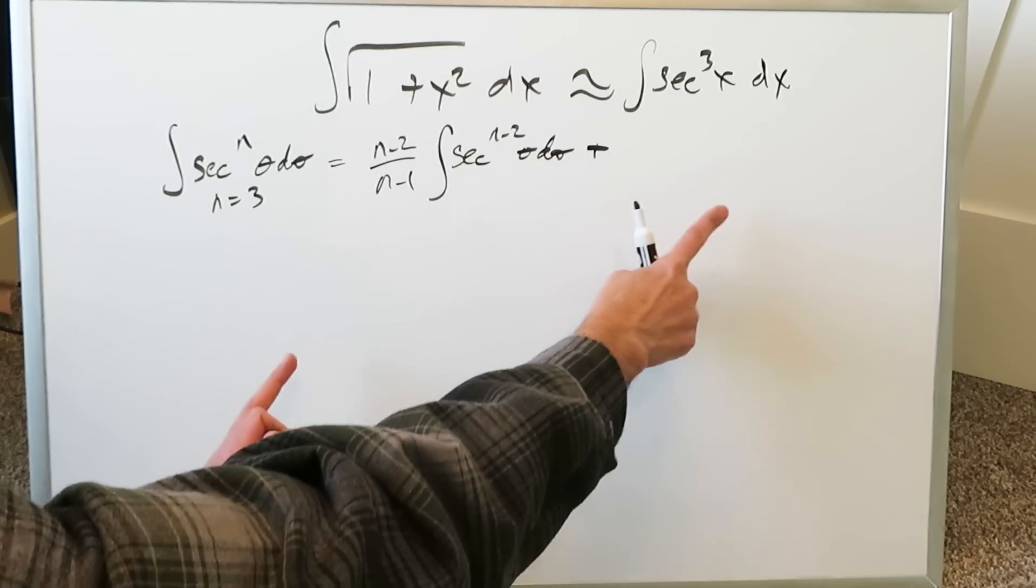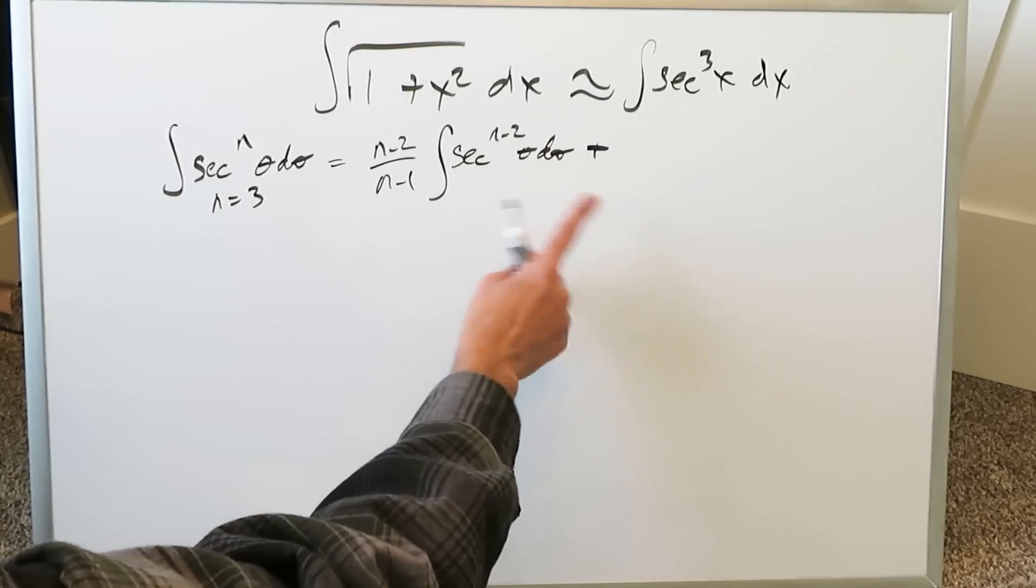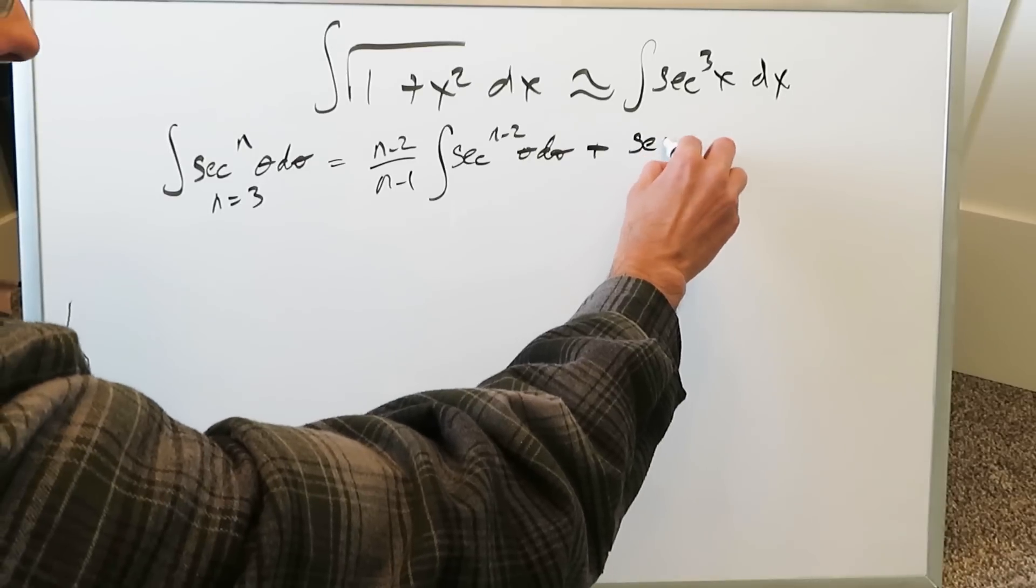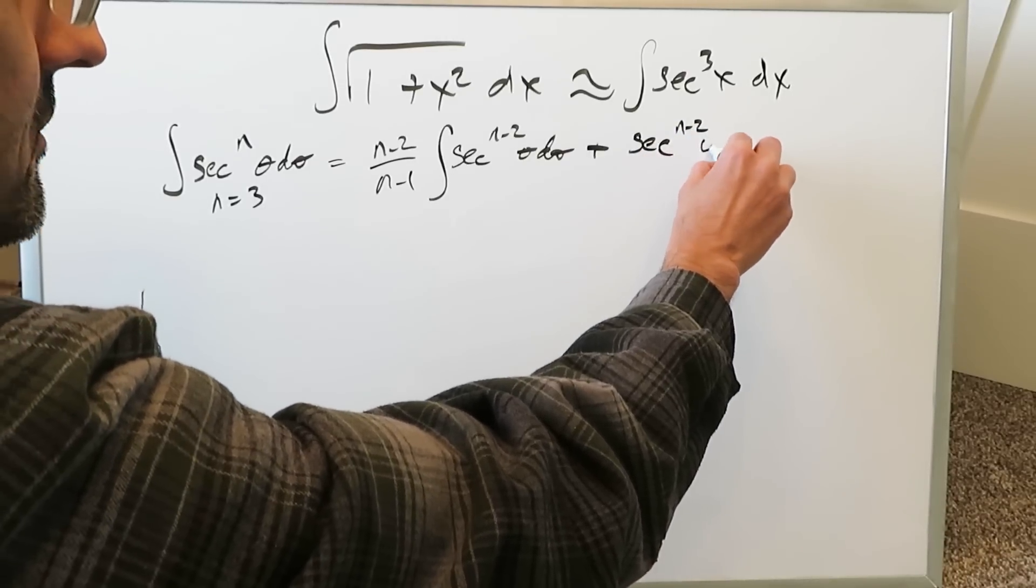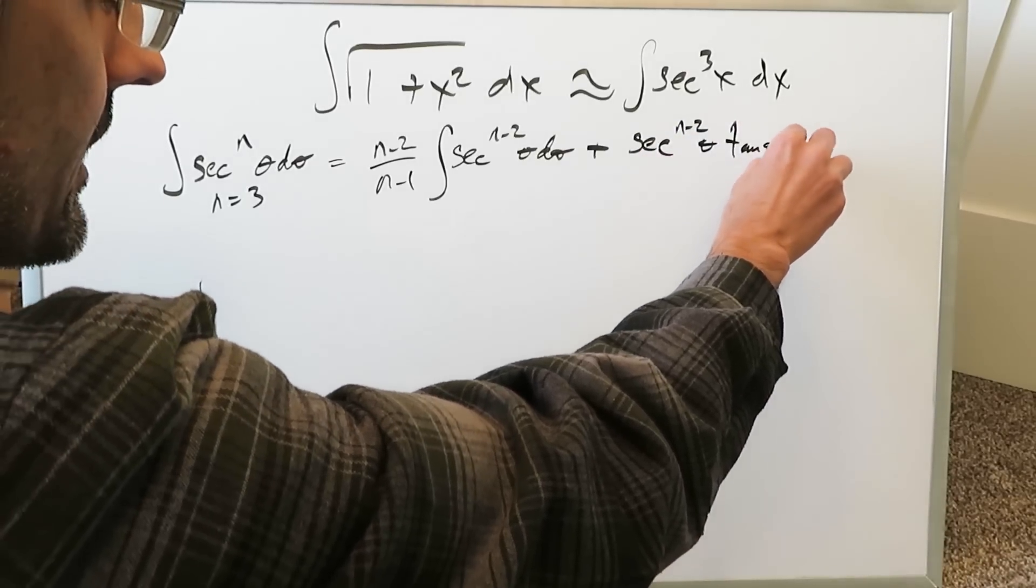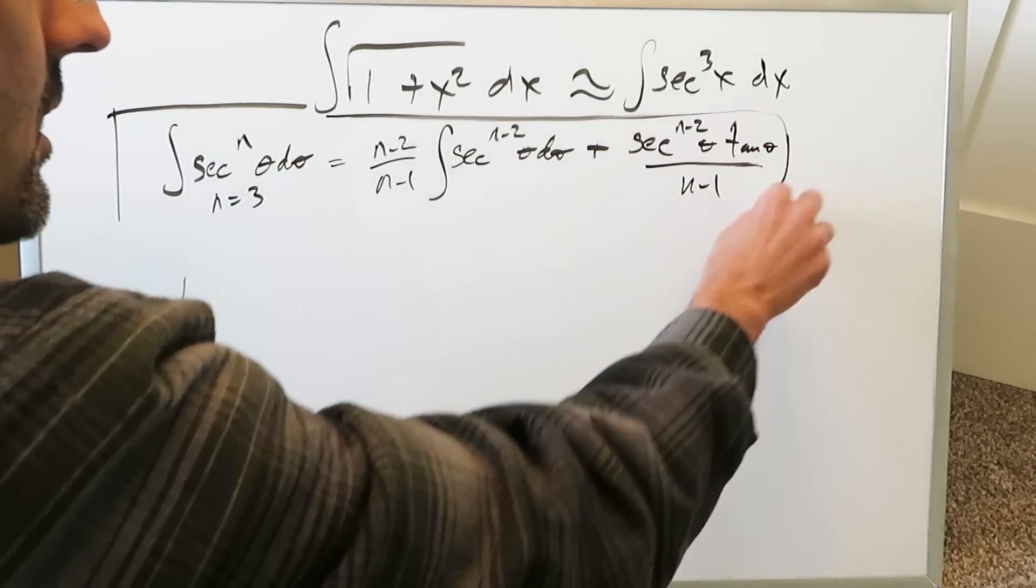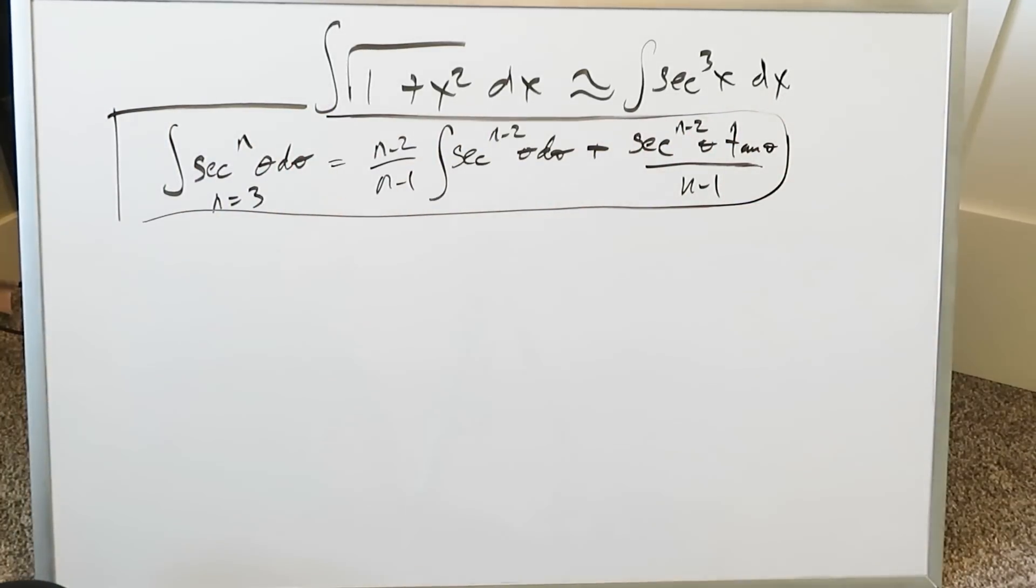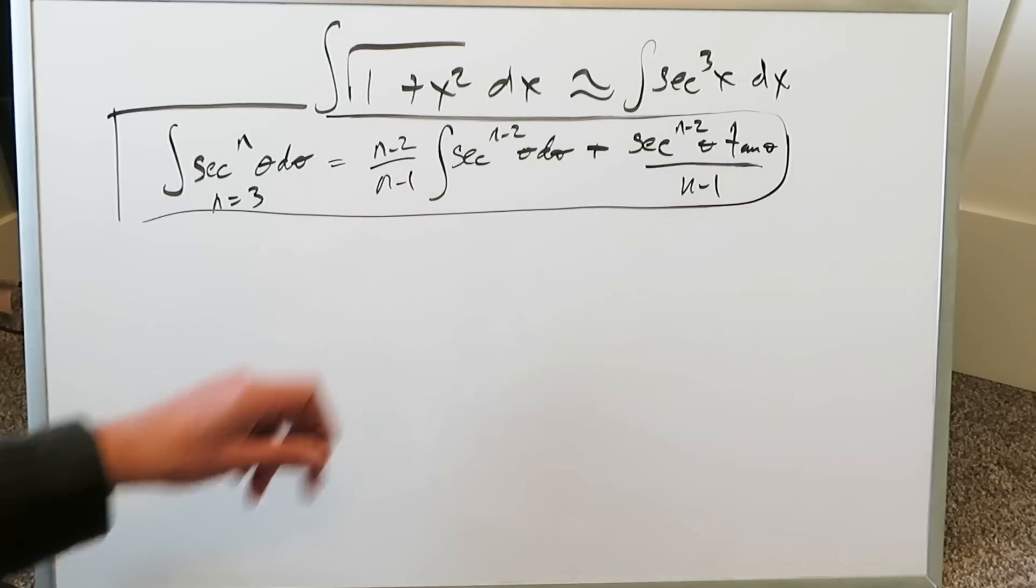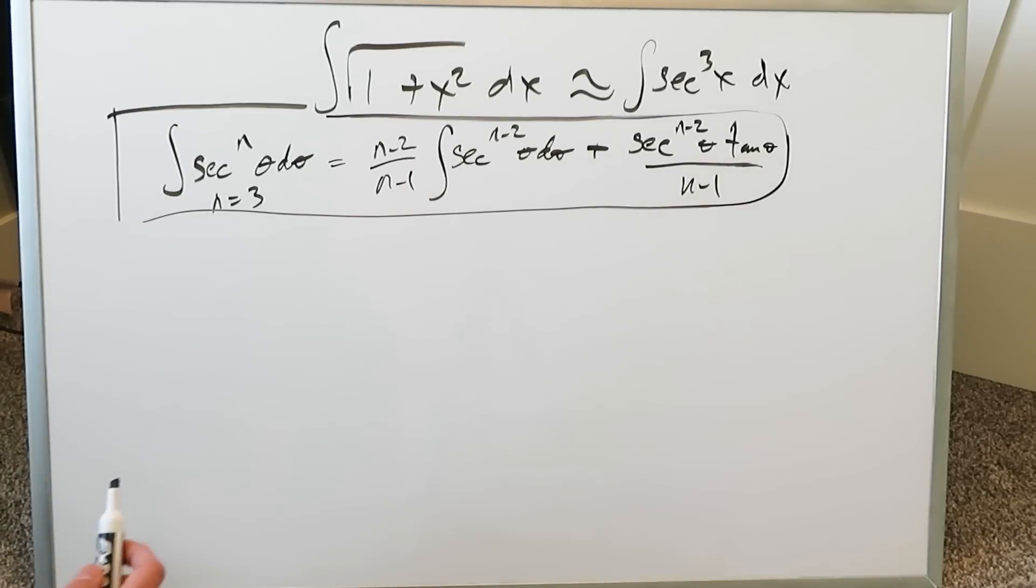This reduction formula has two parts. One comes with an integral, the other comes with no integral. This will be secant n minus 2 theta times tan theta all divided by n minus 1. This here is your reduction formula you need to pay attention to if you want to go this route and be able to solve this using trigonometric substitution.